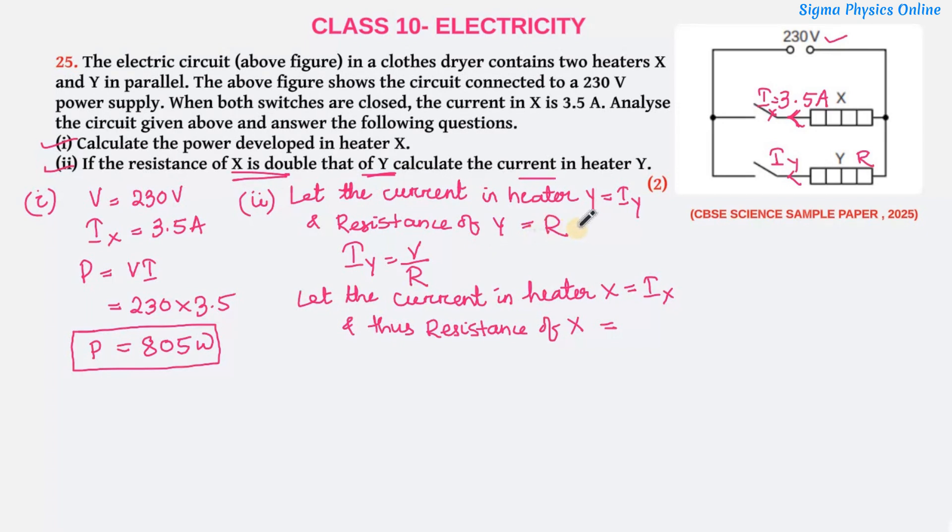Since we have taken the resistance of Y as R, and it's given that resistance of X is double that of Y, the resistance of X becomes twice that of Y. So the current in heater X is IX and the resistance of X will be 2R because the resistance of X is twice that of Y. So IX becomes V by 2R. This is equation 1 and this is equation 2.